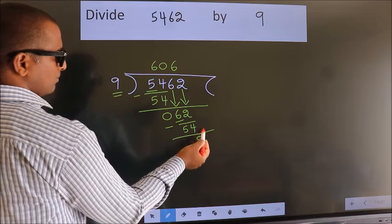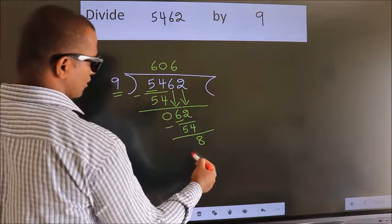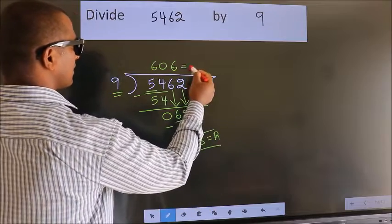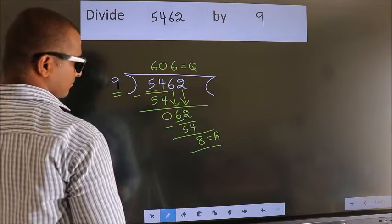No more numbers to bring it down. So we stop here. This is our remainder. This is our quotient.